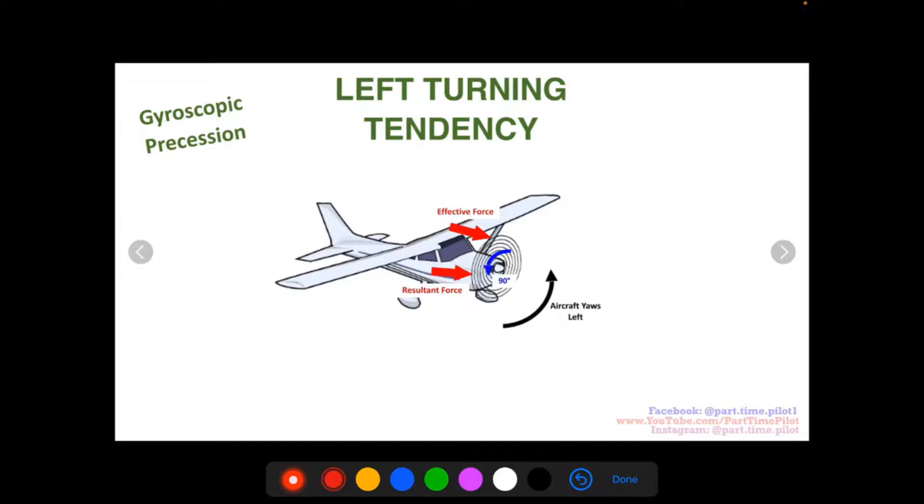So on the right side, and it's going to want to make the aircraft yaw to the left. This is the second factor of a left turning tendency.